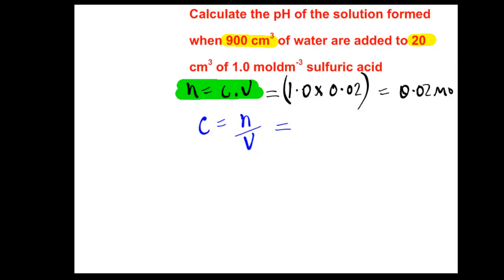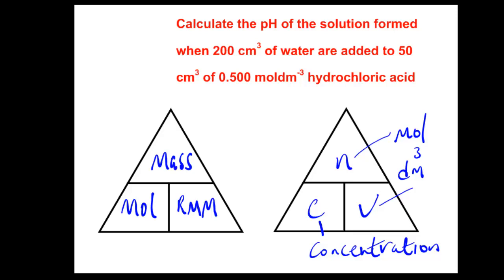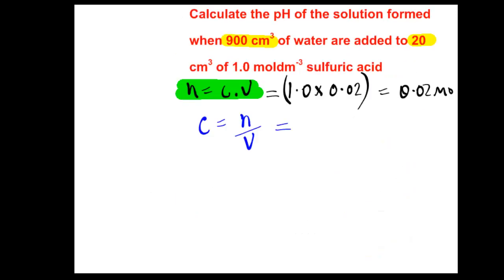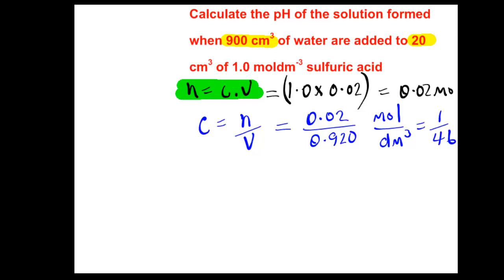Using c equals n over v: the number of moles is 0.02. The new volume after adding 900 cubic centimetres of water will be 920 cubic centimetres — divide by 1000 to give 0.92 dm³. The concentration of the sulfuric acid turns out to be 1 over 46 mole per cubic decimetre.